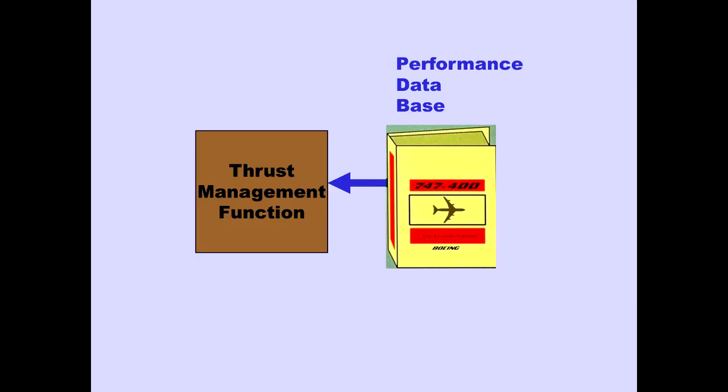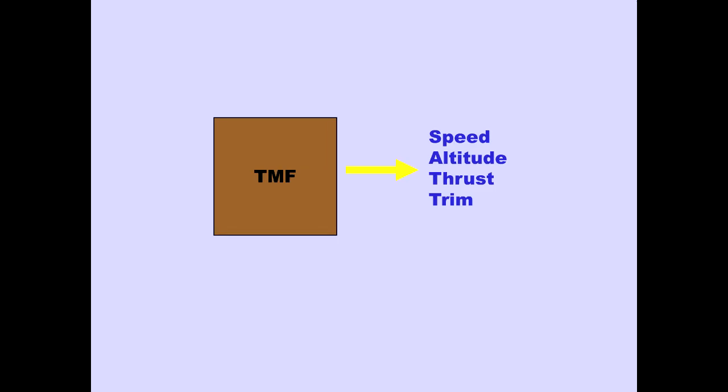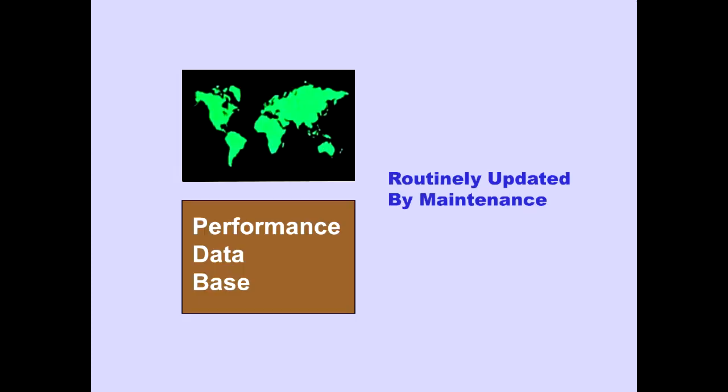The TMF uses information from the Performance Database to compute performance values. The TMF is used for all performance calculations. This includes calculations for speed, altitude, thrust, and trim. Navigation and performance databases are routinely updated by maintenance.